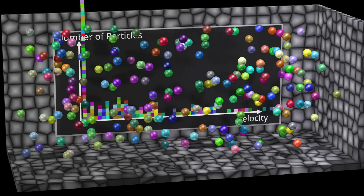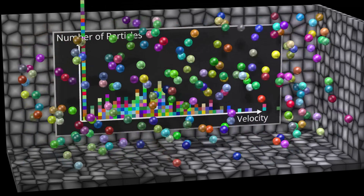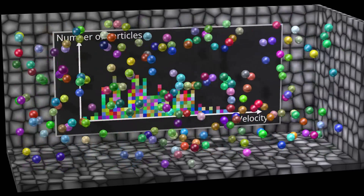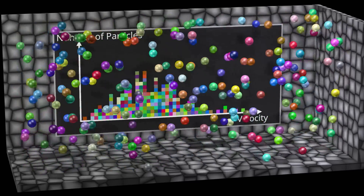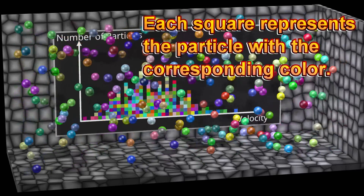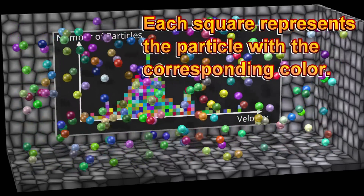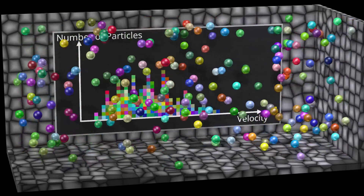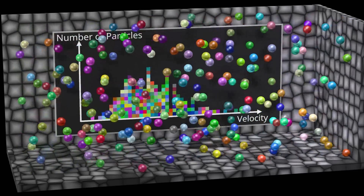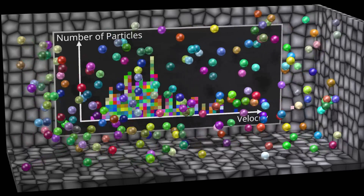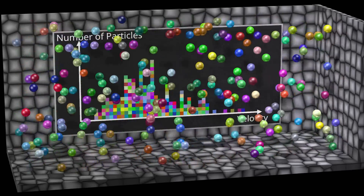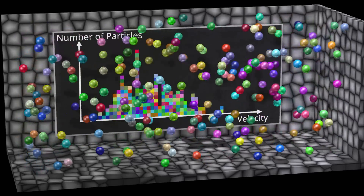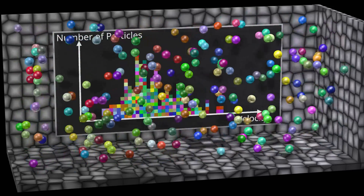Initially, only a few of the particles are moving. The energy quickly spreads throughout all the particles as shown. Each square represents a particle with the corresponding color. The horizontal axis represents the magnitude of the velocity of each particle, and the vertical axis represents the number of different particles with that velocity magnitude.